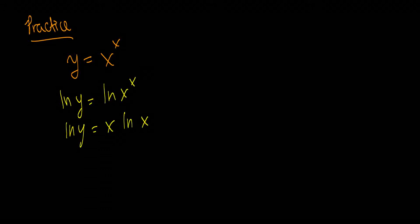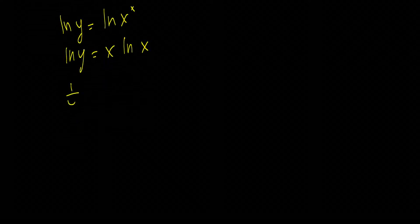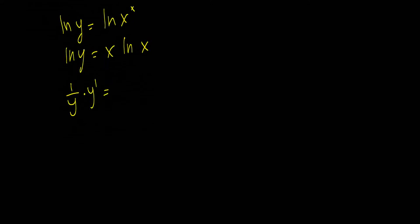Now we implicitly differentiate both sides. So we have 1 over y times y prime is equal to, well, now we have to use the product rule. So we have x times the derivative of ln x, which is 1 over x, plus 1 times ln x. So this is 1 plus ln x.